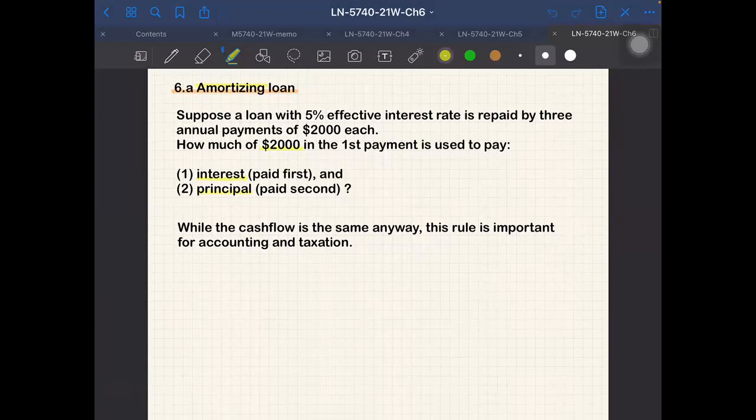The objective of this section is to separate the repayment into interest portion and principal portion. For example, if you borrow a mortgage and pay the first installment, suppose $3,000, how much of that $3,000 is interest and how much is principal? Maybe in the first few years, most of the $3,000 will go to interest, and you can only pay off a small amount of principal.